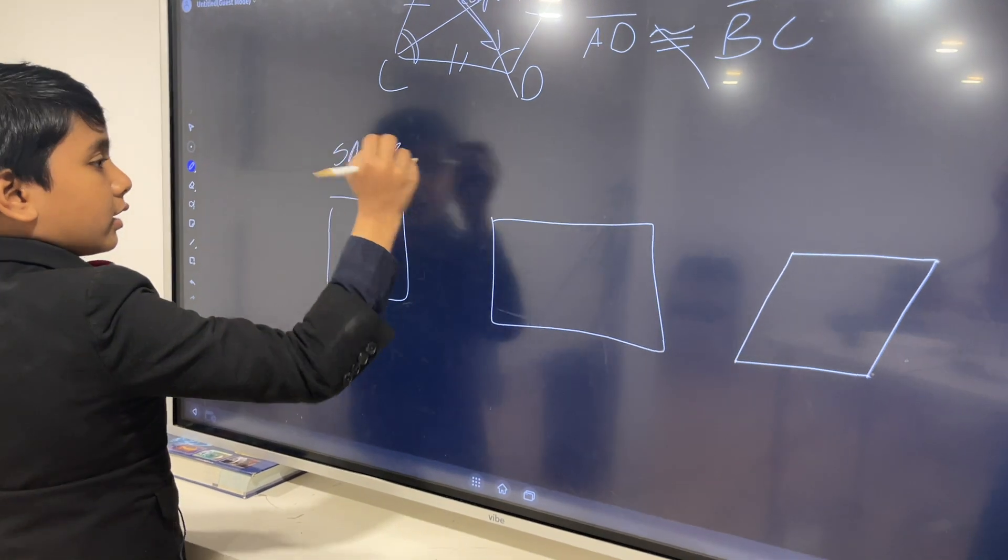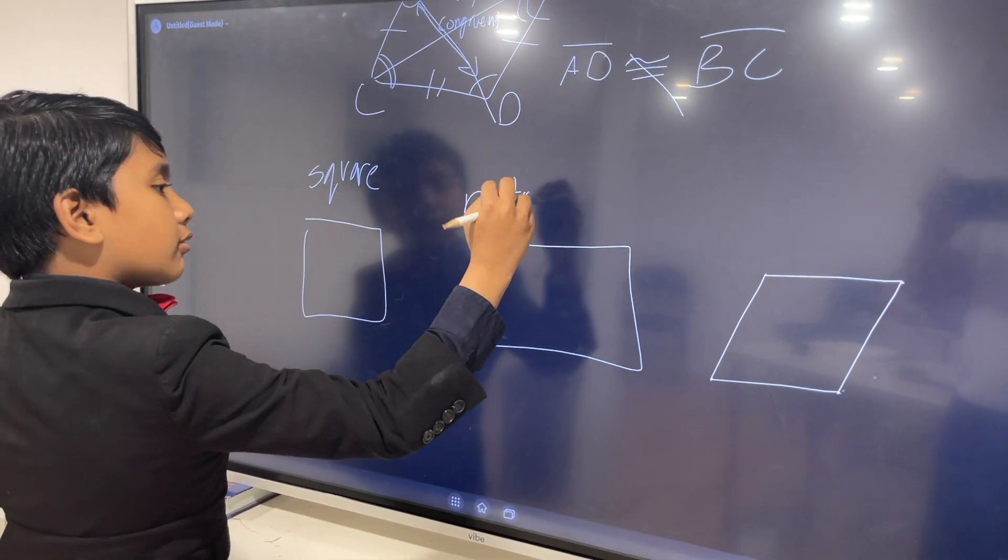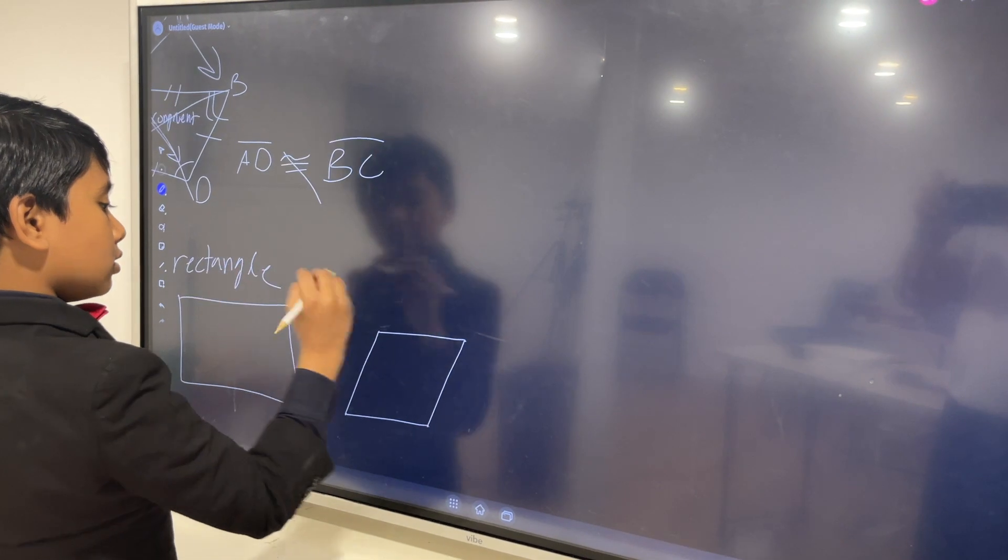You probably know this one is the square. This one is the rectangle. And this one is the rhombus.